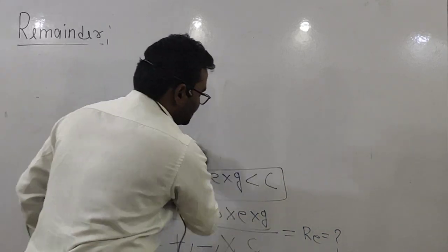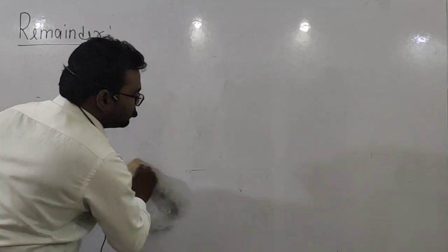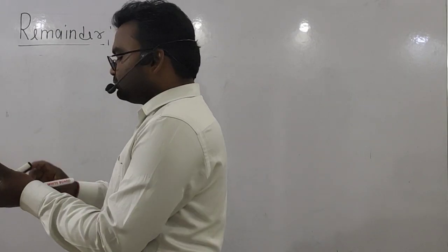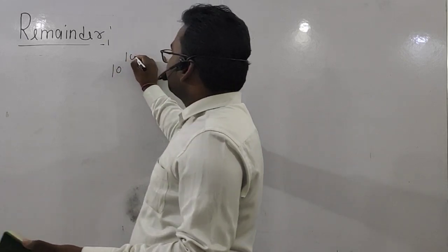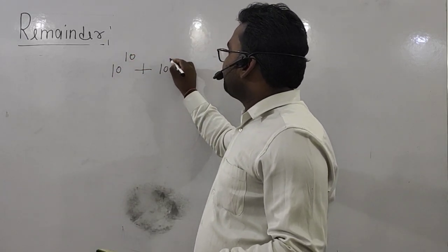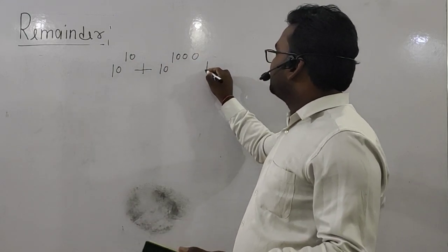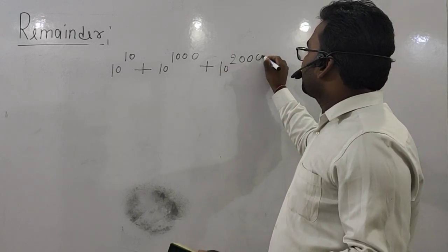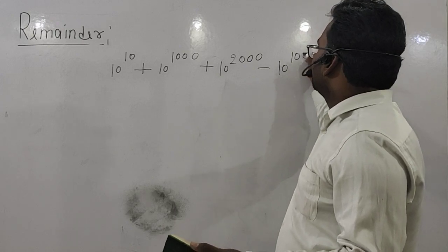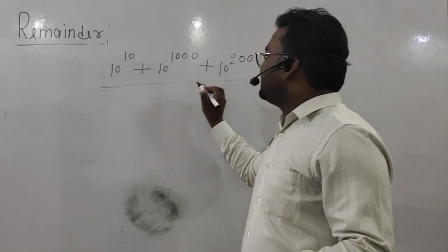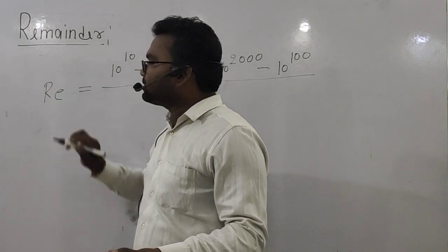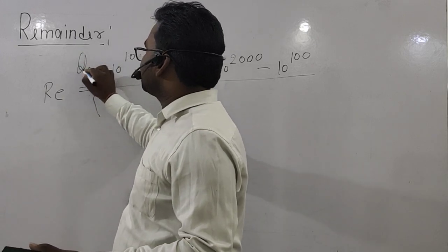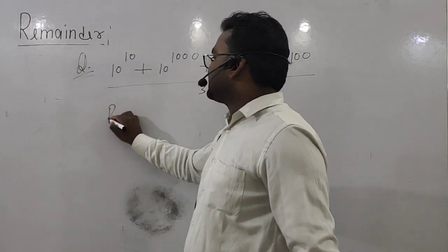Suppose we have the question: 10^10 + 10^100 + 10^2000 − 10^100, all divided by 3. Find out the remainder. This type of problem would be very difficult without the right approach.